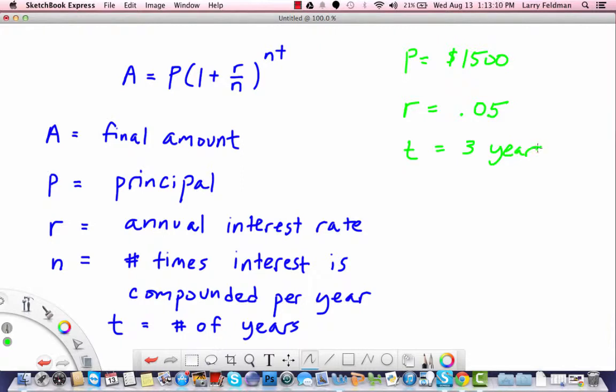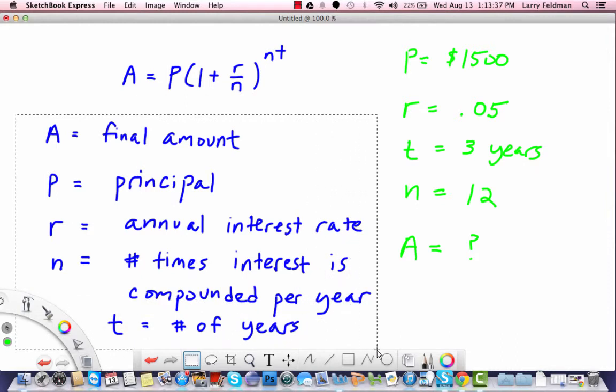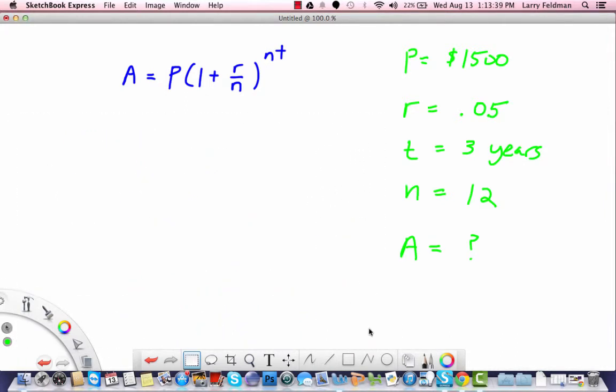And let's assume that you're investing the money for three years. And this can be the tricky part. What is N? Well, let's say the interest is compounded monthly. So if the interest is compounded monthly, you are compounding the interest 12 times per year. So all we need to do to find A, and I'll just write A equals question mark here, and let's make some room here.